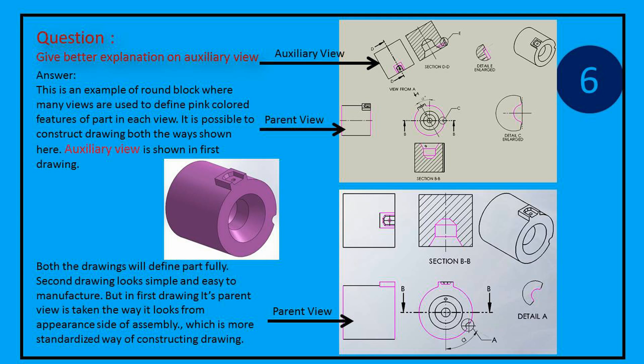Auxiliary view is shown in first drawing. Both the drawings will define part fully. Second drawing looks simple and easy to manufacture. But in first drawing its parent view is taken the way it looks from appearance side of assembly, which is more standardized way of constructing drawing.